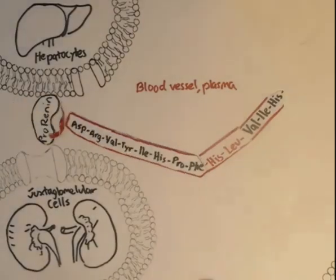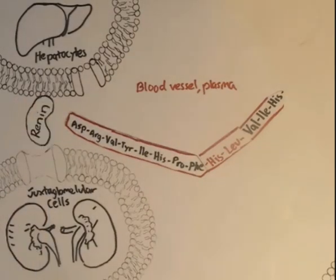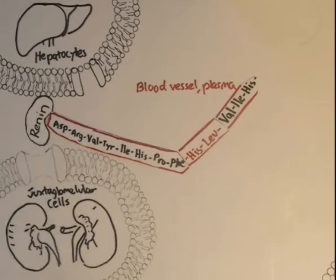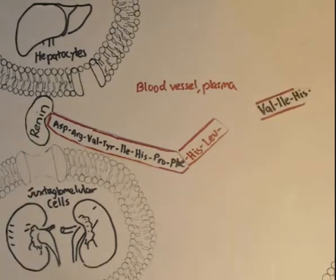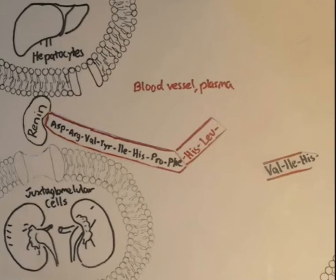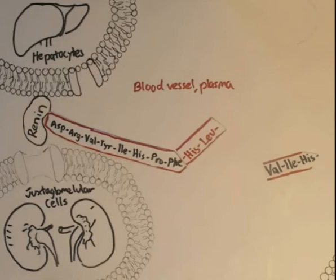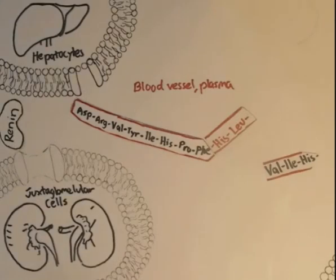As you can see, angiotensinogen cannot bind because of the blocked activation site with pro-renin, but it can easily bind to renin. Once it's bound to renin, the peptide bond between leucine and valine gets cleaved off, creating a decapeptide. If you count the molecular structure of this remainder peptide chain, it's got 10. This decapeptide is also known as angiotensin-1.